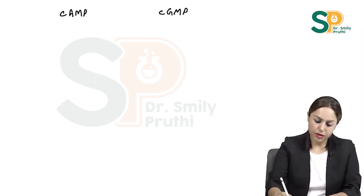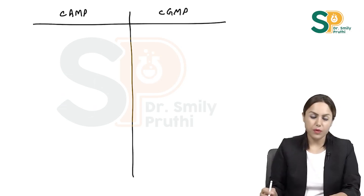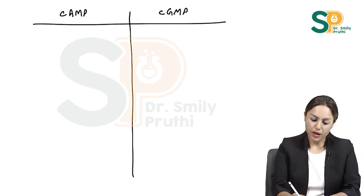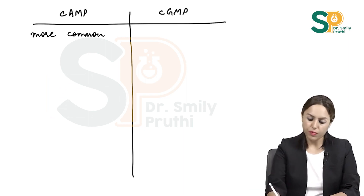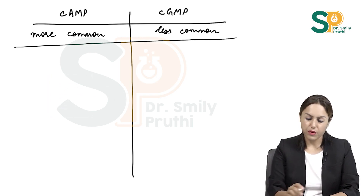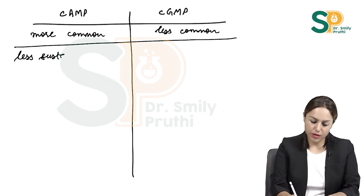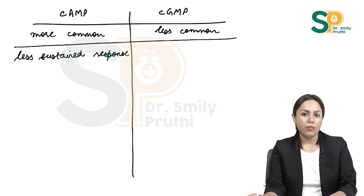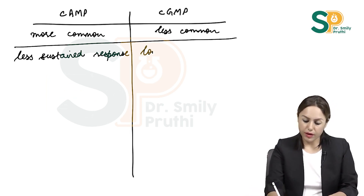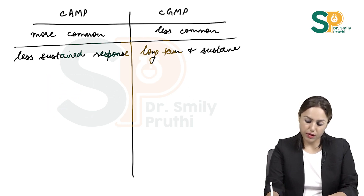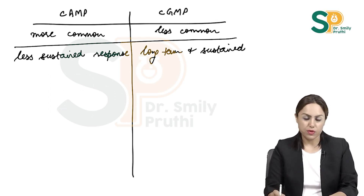Cyclic AMP and cyclic GMP. Cyclic AMP is the more common second messenger, while cyclic GMP is less common. Cyclic AMP has a less sustained response, but on the other hand, cyclic GMP has a long-term and sustained cellular response.